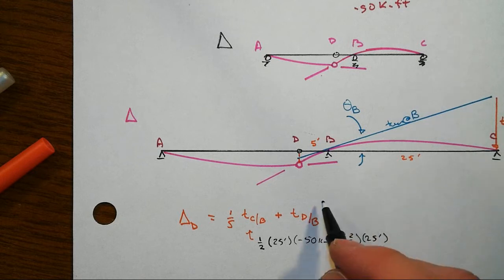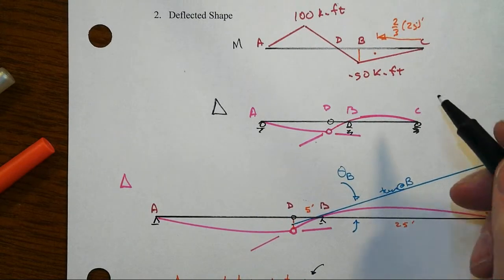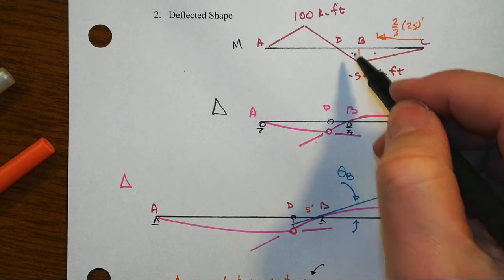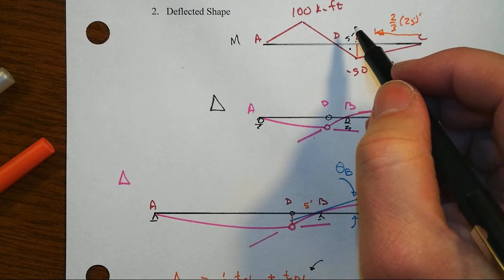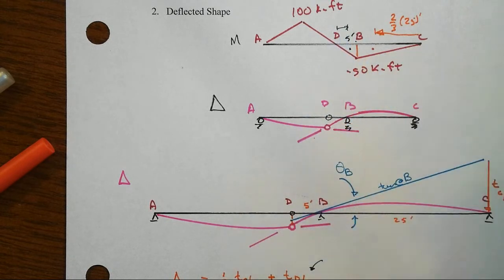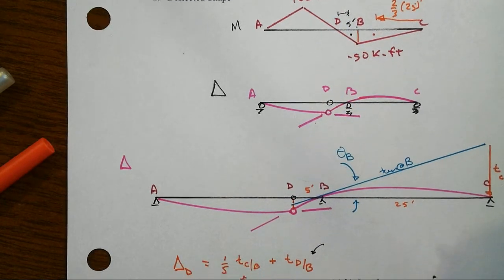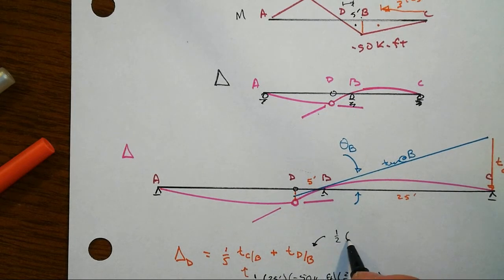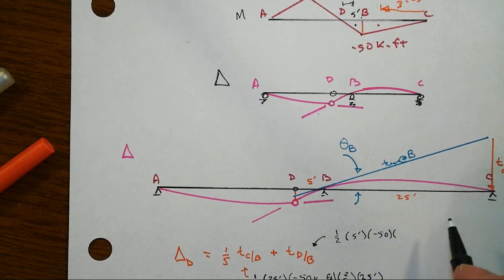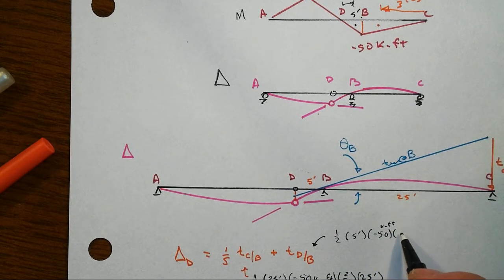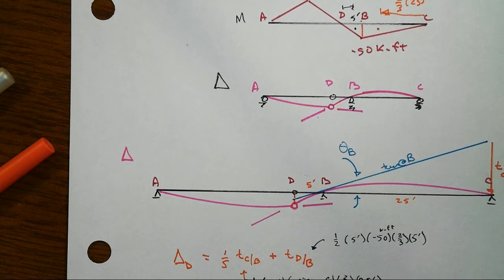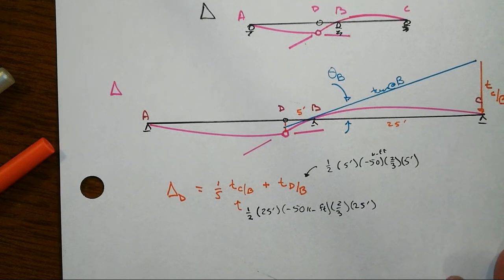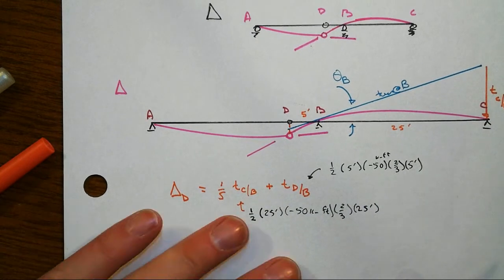And then, let's see, the TD at B is going to be a similar kind of thing. We've got a little piece here. Here we know that that's only five foot over, and this is the tangential deviation of D with respect to B, so we're going that way for the moment arm. So that means that we've got one-half of the base of five feet times the height of minus 50 kip foot times the two-thirds of five feet to get that particular moment arm. So that's how we go about getting those, just the delta D.